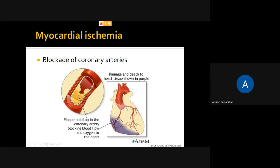Myocardial ischemia is due to blockage in the coronary arteries — the right coronary artery and the left coronary artery. When these arteries are blocked, there is no oxygen and the tissue dies. If there is a block in one coronary artery, a small part of the heart is damaged and the heart cannot pump enough blood. When the heart cannot pump enough blood, oxygen does not reach the brain, and the person will die. That is why this is an emergency and must be treated immediately.